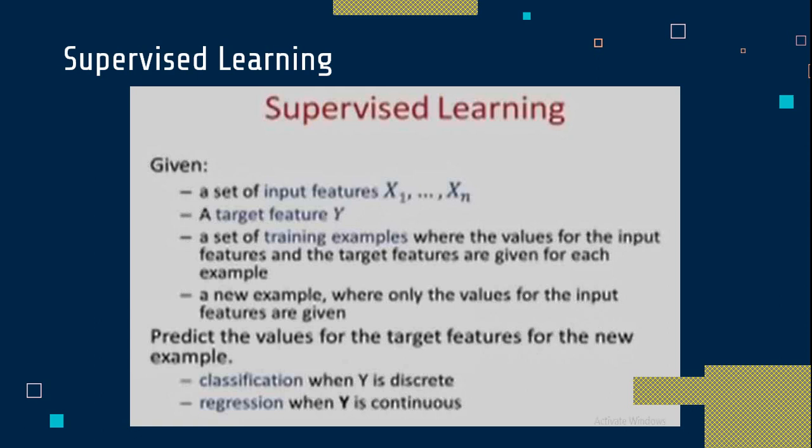Let's consider an example. I have a dataset with features x1, x2, up to xn, and my target feature is y. For instance, I have temperature data for different cities in India — Mumbai, Delhi, Nasik, Aurangabad, Ahmadnagar — any city.